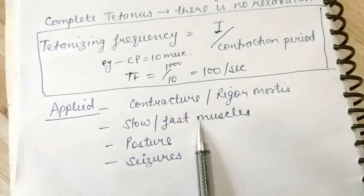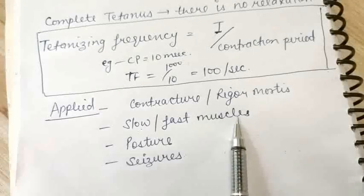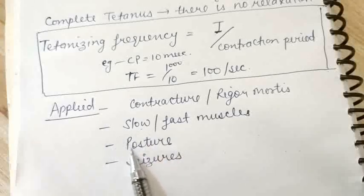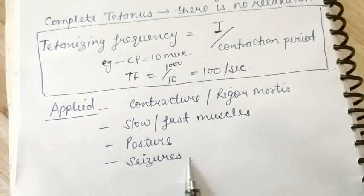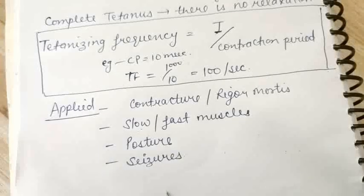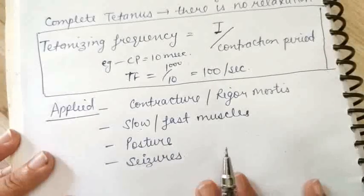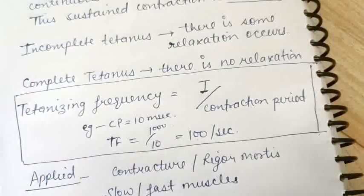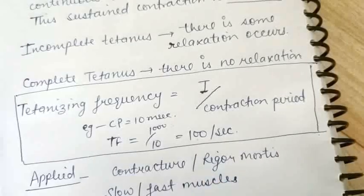Fast muscles have high tetanizing frequency since their contraction phase is short. We are also able to understand posture maintenance muscles. Seizures occur because of tumor, injury, or brain stimulation increase — causing multiple seizures, clonus, and many types of seizures. This concept is understood through this experiment. We're done with the experiment of genesis of tetanus. If you have any query, comment below. Thanks for watching, bye bye, happy learning.